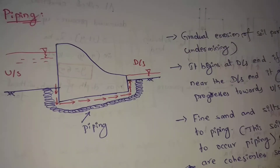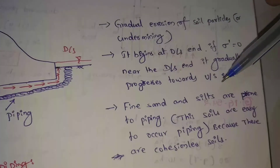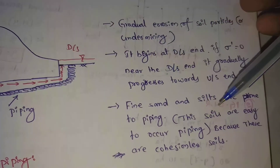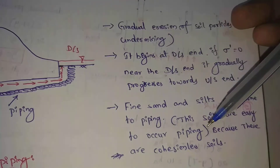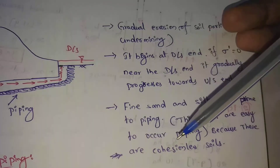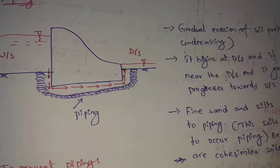The piping is first associated with fine sand and silt. Fine sand and silt are prone to piping — these soils are easy for piping to occur because these are the susceptible soils.